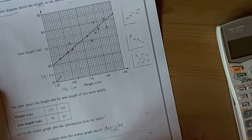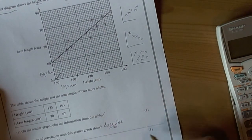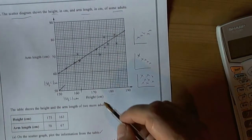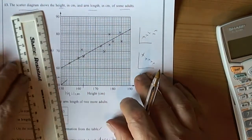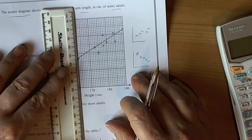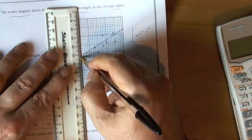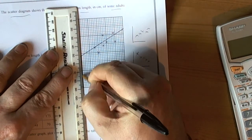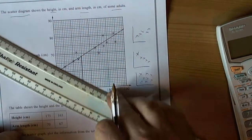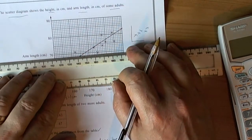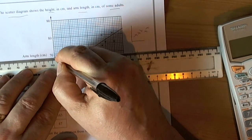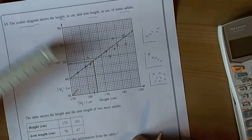So using our line of best fit, this will then help us to estimate as accurately as we can. So we're saying 165, so again always draw your method. So we get our ruler and we draw up to the trend line, up to the line of best fit. And we then come across horizontally and we then read off as carefully as we can.